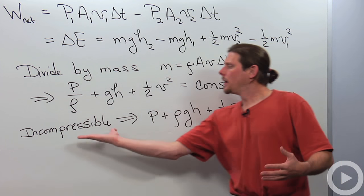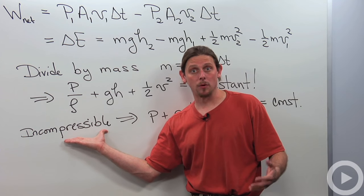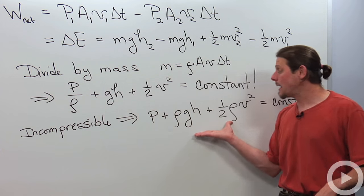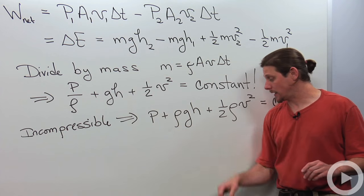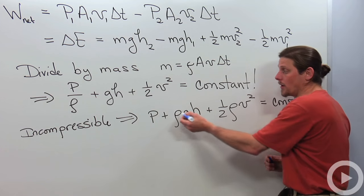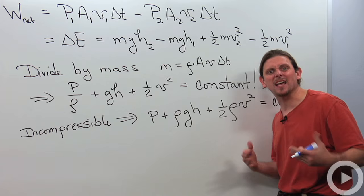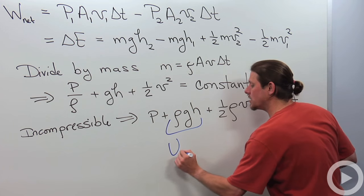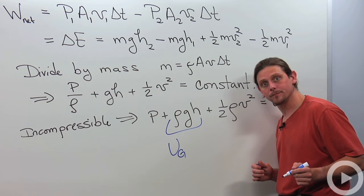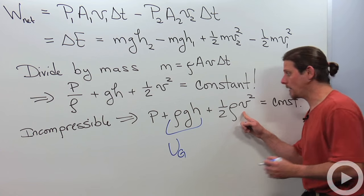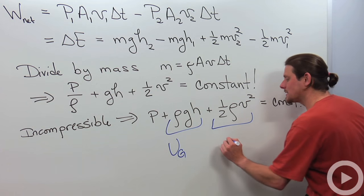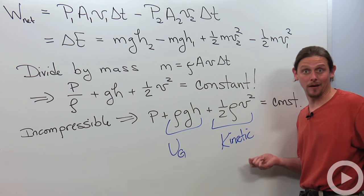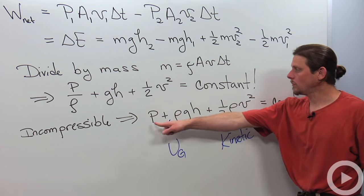This is better if the fluid is incompressible because then the density is constant and we can multiply by it and look at it directly. I've got rho GH—that's like mass times G times H, so this is gravitational potential energy. 1 half density speed squared looks just like kinetic energy.